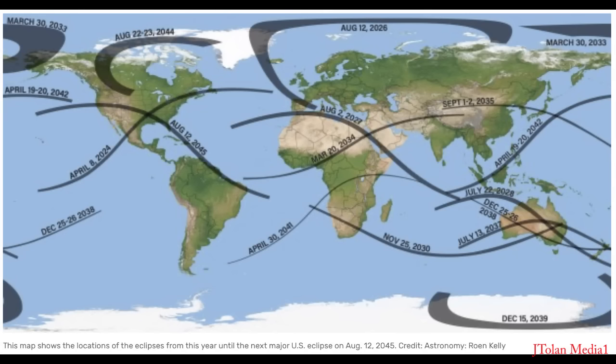Solar eclipses occur every few years, and if you want to be in the path of totality, you may have to travel. The next one in the U.S. will be in August 2045. That's 21 years from now, so stay healthy and eat your veggies, and who knows, you may get to see it from your backyard.